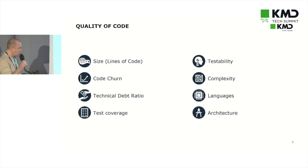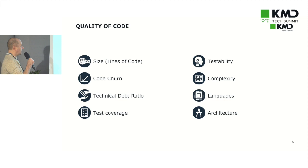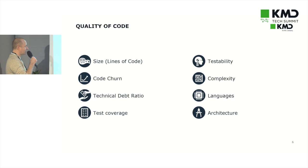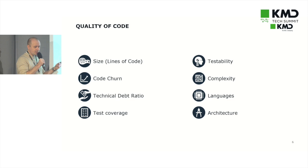When we talk about code quality, we have different parameters. The first one — size — doesn't really have anything to do with quality, but it is a useful measure for other parameters. We look at code churn: how many changes are happening to the codebase, how often do we have to modify committed files. We look at technical debt ratio. We look at test coverage and testability of the code — how well is the code written to be tested. We look at complexity and readability. We look at which languages are used, to understand what competences are needed. And we look at the architecture, which tells us about scalability.